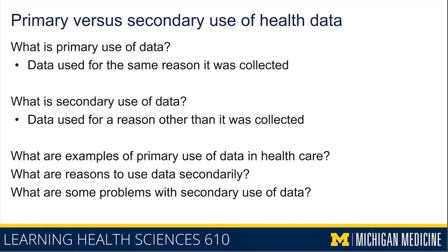Some of the problems with secondary use of data are that when you're analyzing data for a different reason than why it was collected, there are going to be biases or issues with the sampling and how the data was collected. These will manifest when you go to analyze it — they may not be obvious at first but you will find them in the course of your analysis.